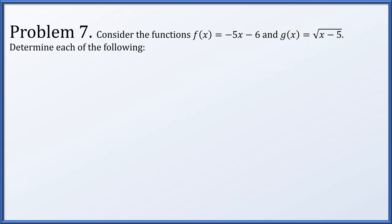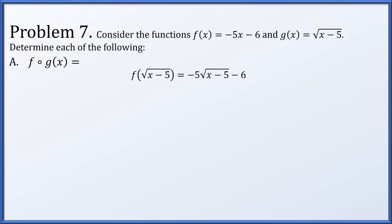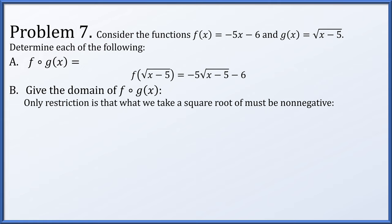Problem 7: f(x) = -5x - 6 and g(x) = √(x-5). First, f(g(x)): g(x) = √(x-5), plugged into f gives -5√(x-5) - 6. The domain requires x - 5 ≥ 0, so x ≥ 5.